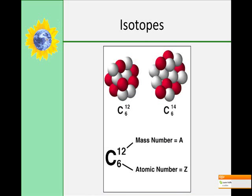Isotopes are different forms of an element. They only differ in the number of neutrons in the atom's nucleus. The number of protons remains the same.